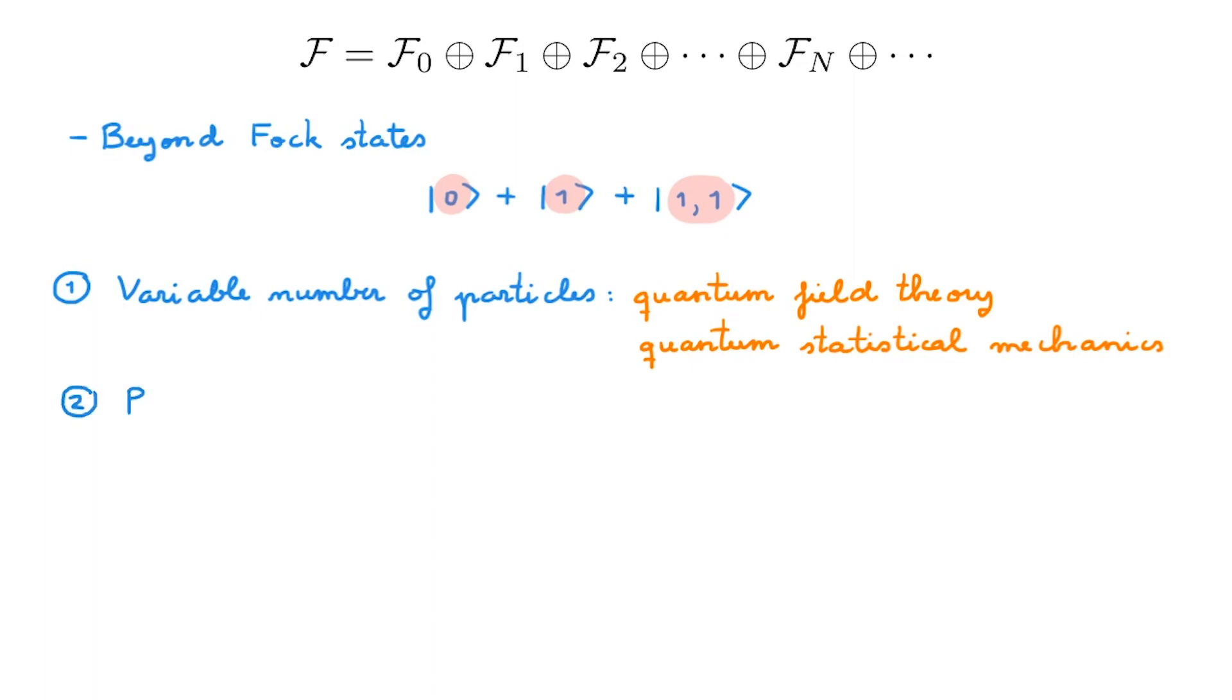The second is a more practical reason. Fock space is a very useful mathematical tool to describe systems with a fixed number of particles in which during the calculation we may allow for the number of particles to change, but at the end of the calculation we always recover the fixed number of particles we started with.